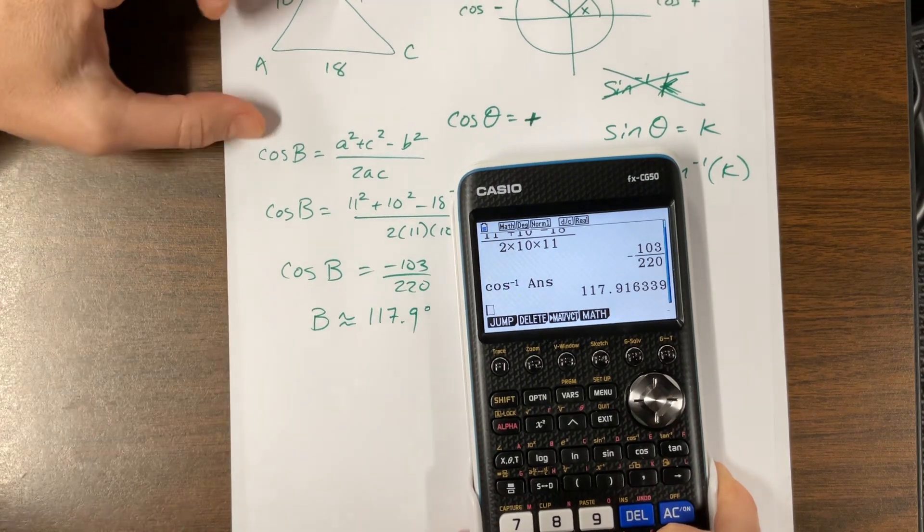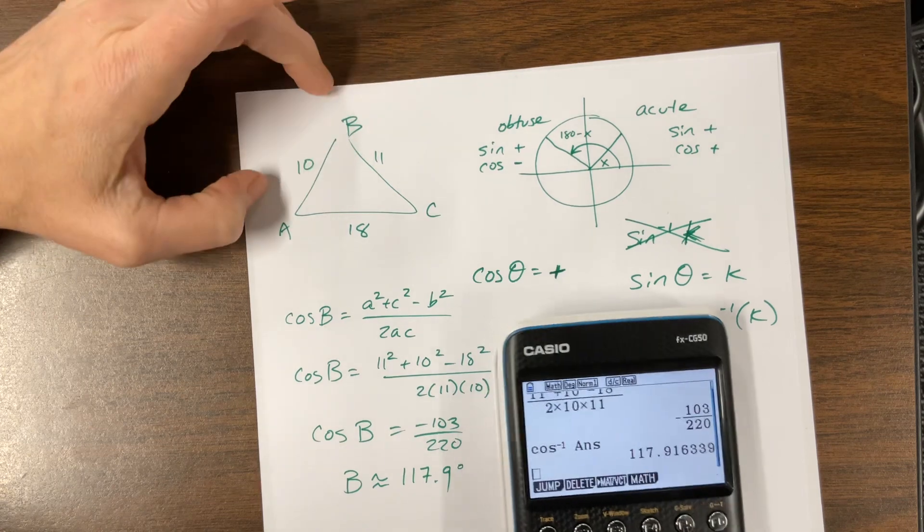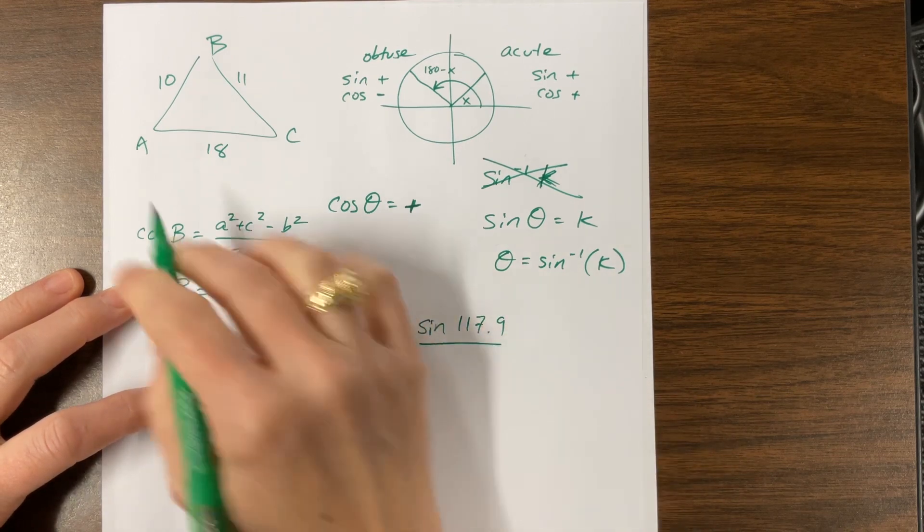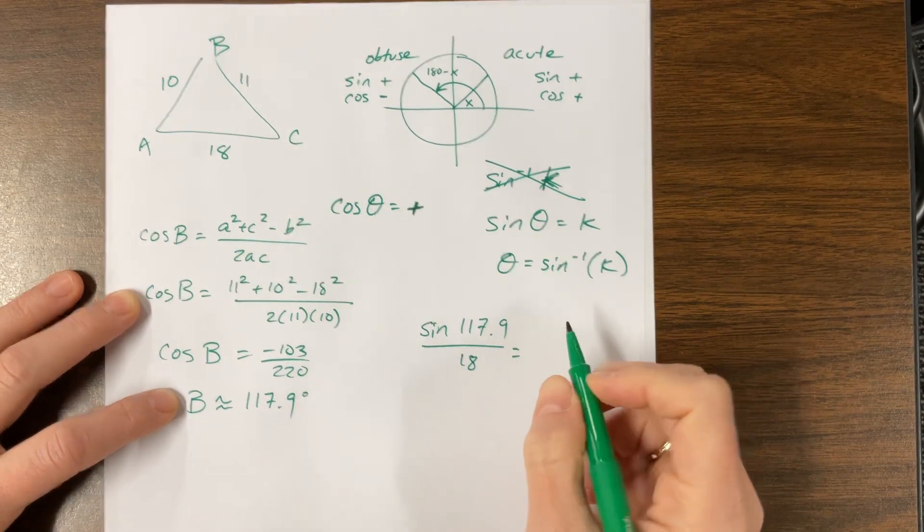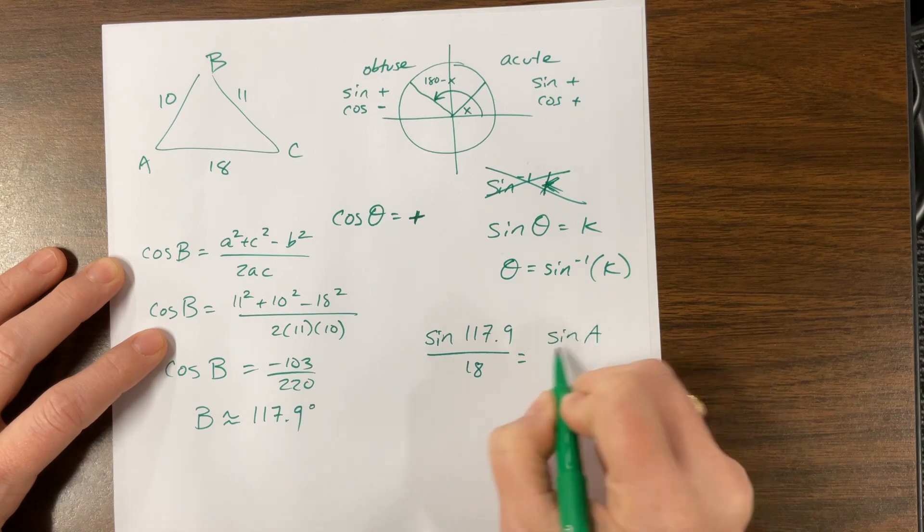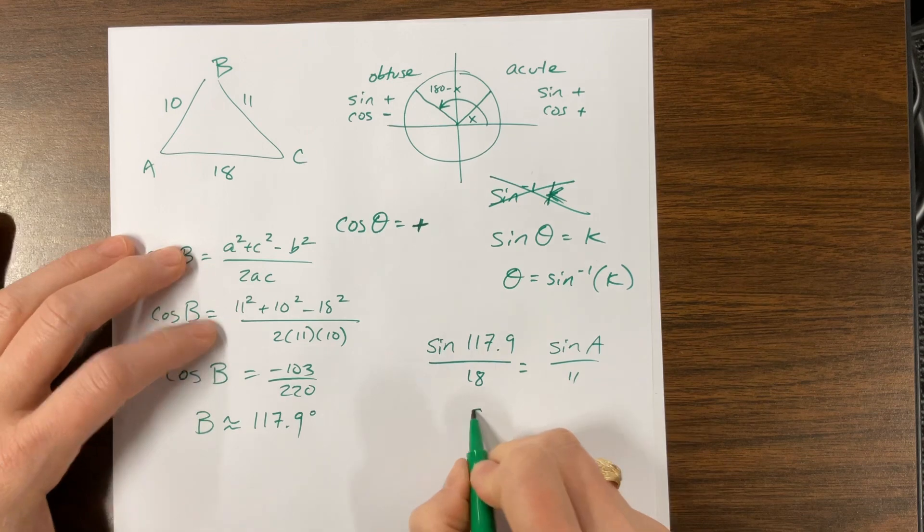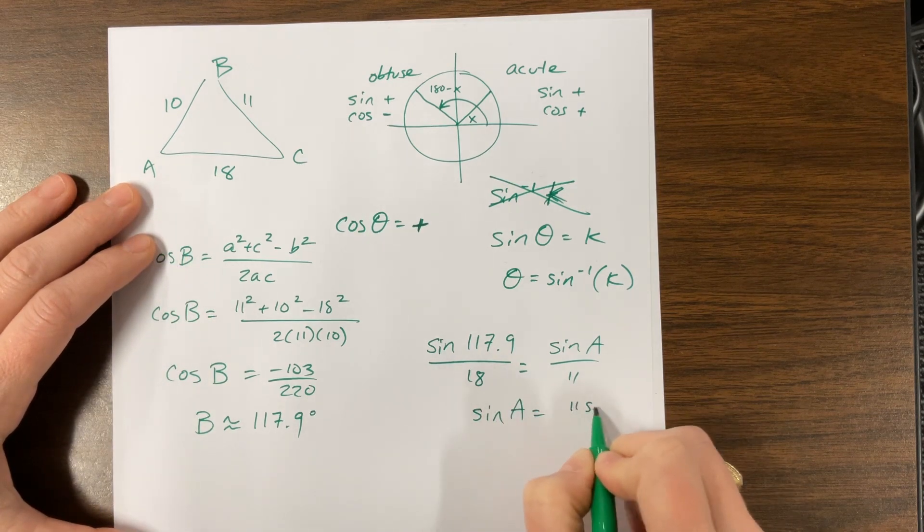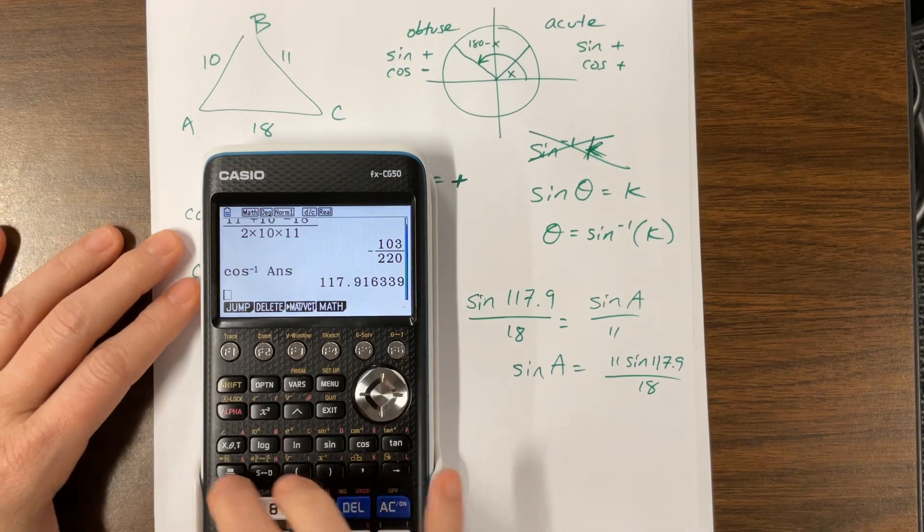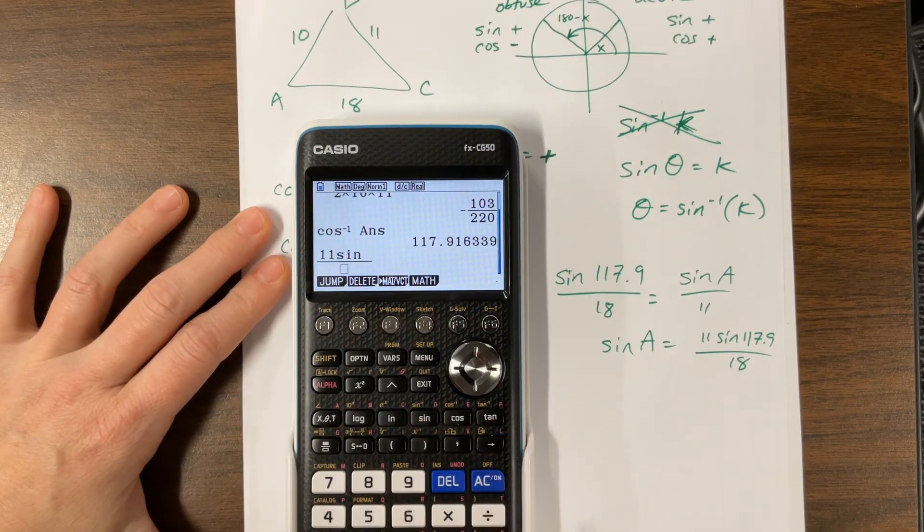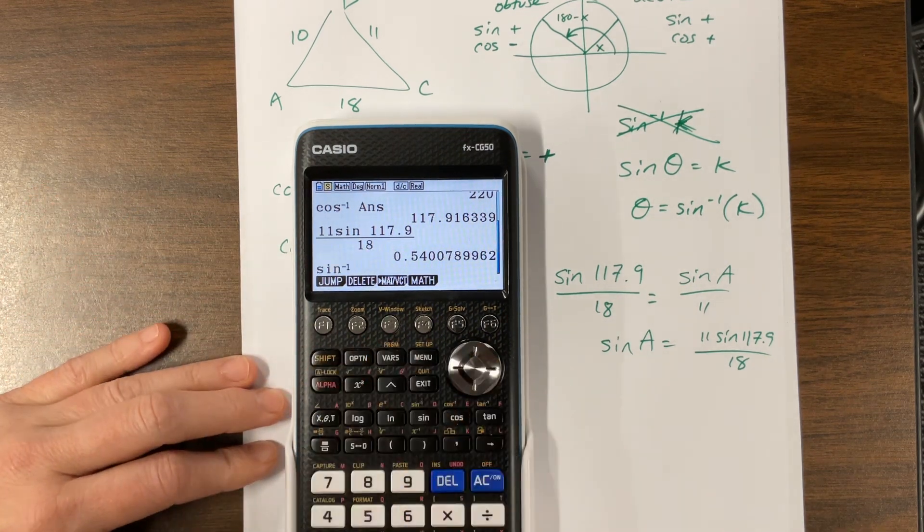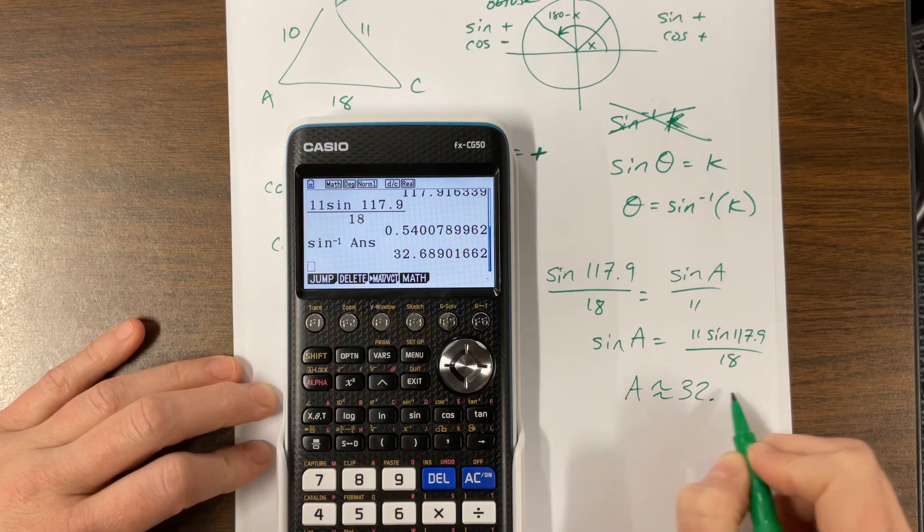Okay, so then I can use that and come back here and say, well, we can use the law of sine to find a missing angle. So I could say sine of B, 117.9 over 18 is equal to sine of A over 11. Okay, now when I solve this, I have sine of A is equal to 11 sine of 117.9. My numbers may not be perfect because I rounded, but no need to let perfect get in the way of the good. Okay, so 11 sine 117.9 over 18. Here's that ratio. I can find the inverse sine of that answer, and I just found that A is about 32.7 degrees.